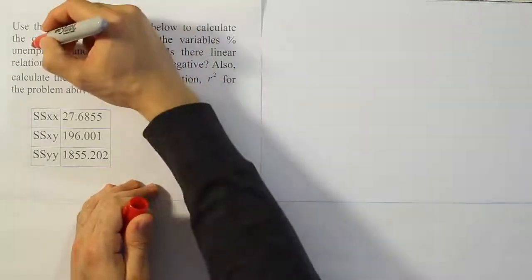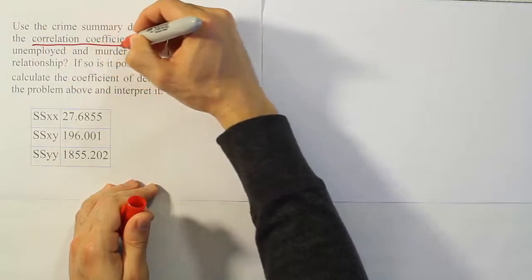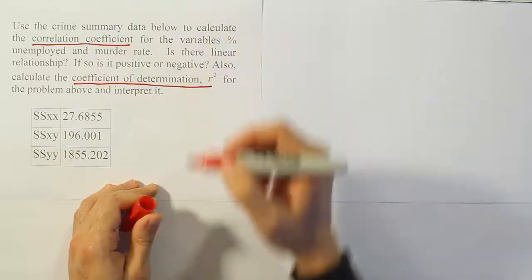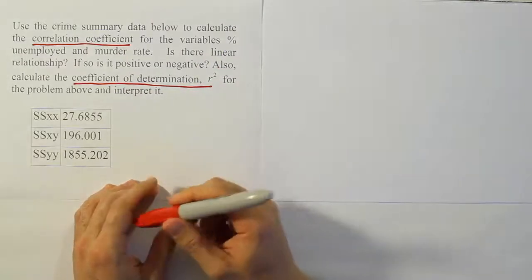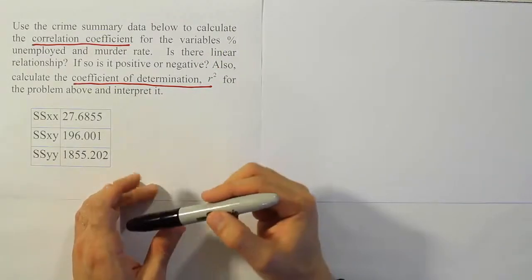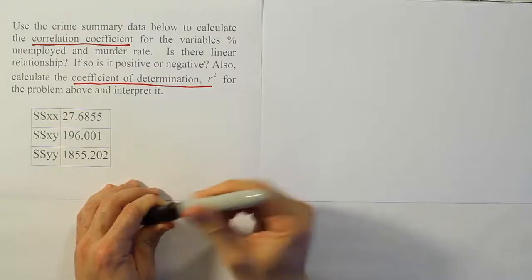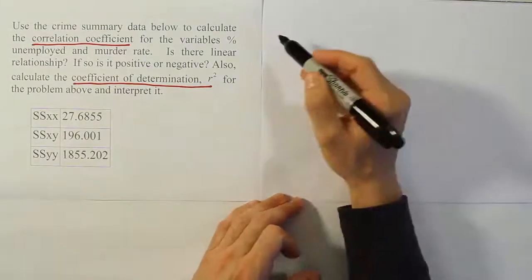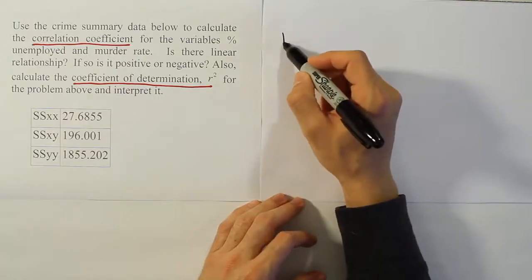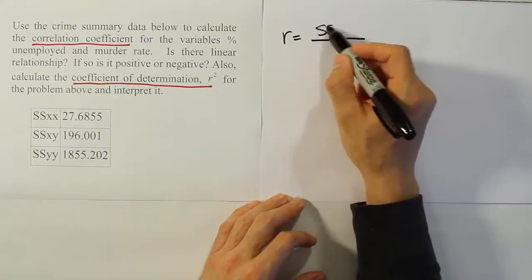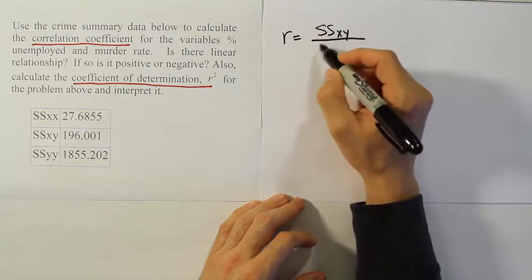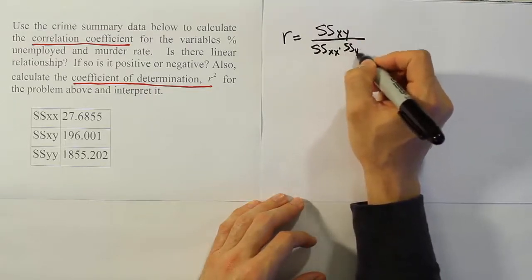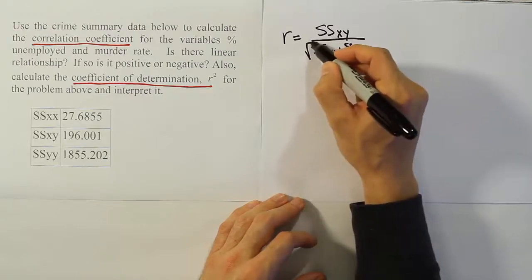We want to find the correlation coefficient r, and we're looking for the coefficient of determination r squared as well. We're going to interpret r first before we do the coefficient of determination, and then we'll interpret the coefficient of determination once we've done calculating that. So let's look at the calculation for r — it's a simple fraction involving ssxy divided by the square root of ssxx times ssyy.